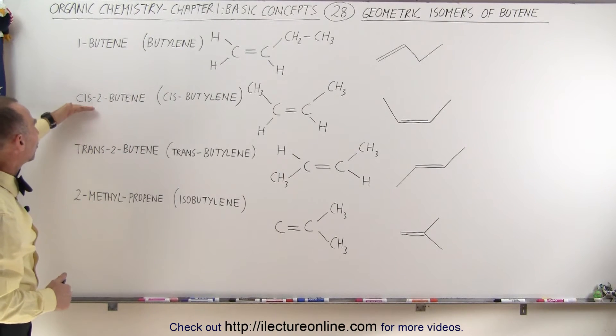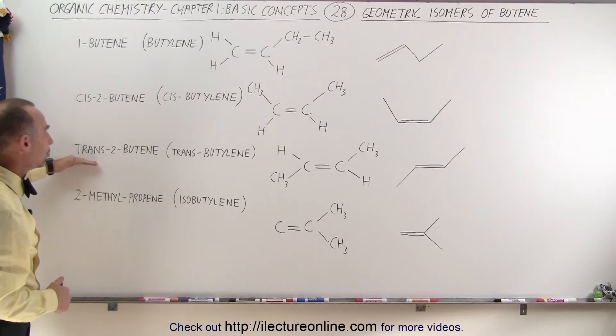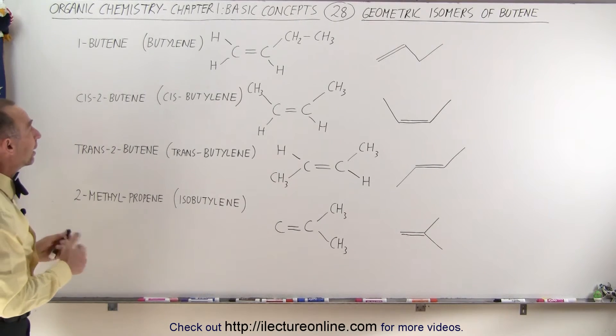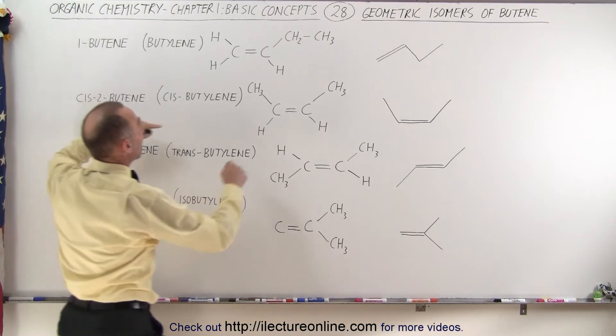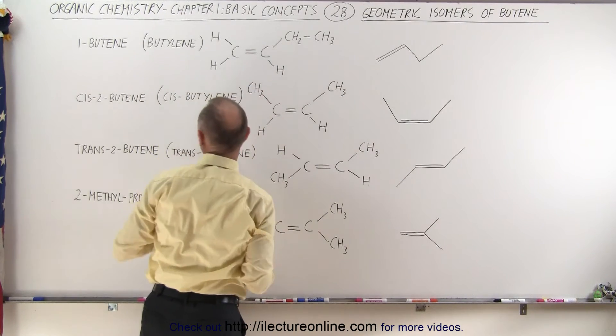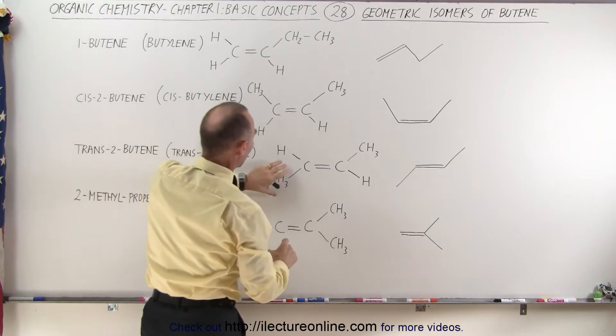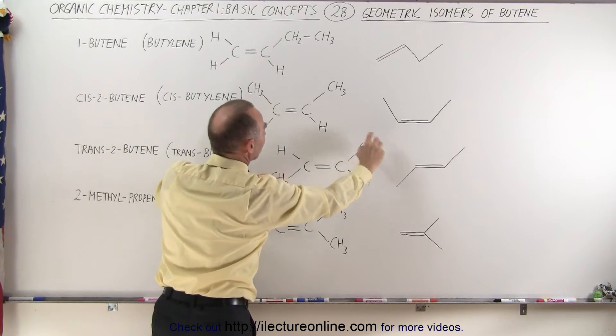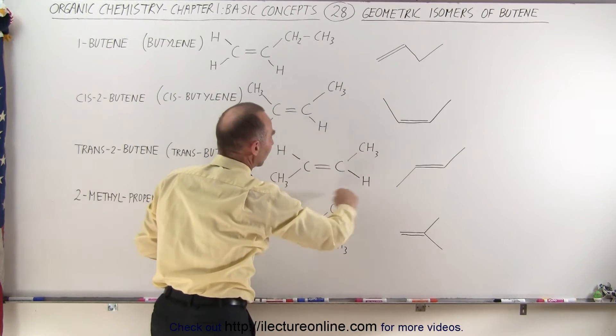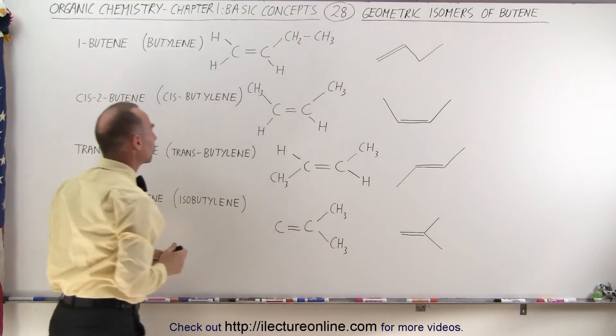Then we have the cis-2-butene and the trans-2-butene. We've seen those before. And notice that in the cis case, we have both of the methyl groups on the same side of the molecule. On the trans case, we have one of them on one side and the other one on the other side. We know now that this is slightly more stable than this molecule.